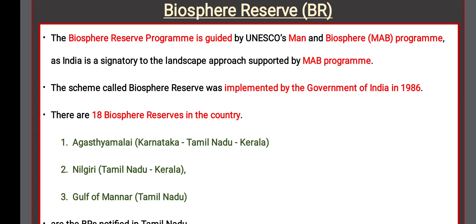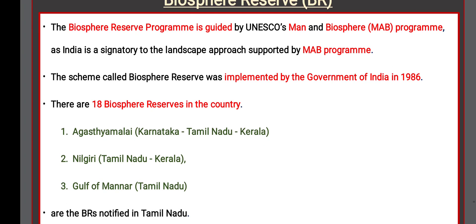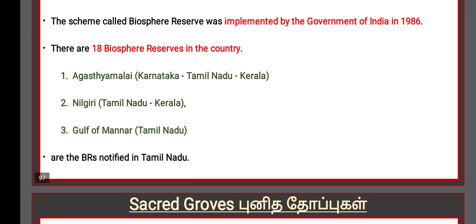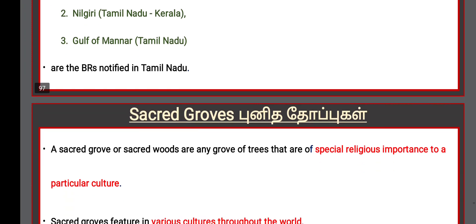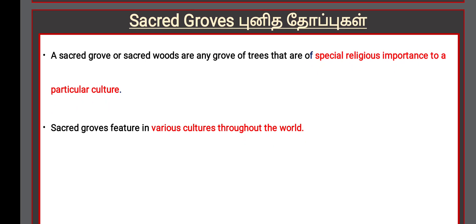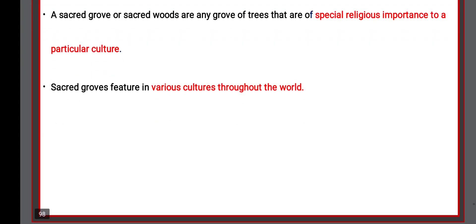Biosphere Reserves notified in Tamil Nadu include Agasthyamalai (Karnataka, Tamil Nadu, Kerala), Nilgiris (Tamil Nadu, Kerala), and Gulf of Mannar (Tamil Nadu). Sacred Groves are sacred woods or groups of trees of special religious importance to a particular culture, and they feature in various cultures throughout the world.